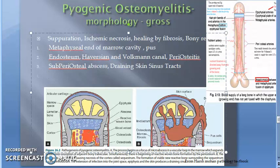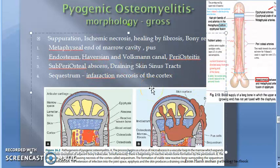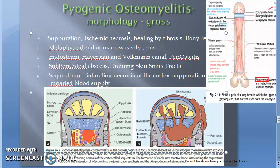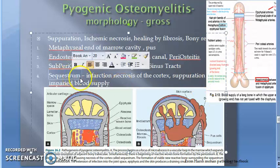Combination of suppuration and impaired blood supply to the cortical bone results in erosion, thinning, and infarction necrosis of the cortex — this is called sequestrum. Sequestrum is formed — it is the infarction necrosis of the cortex. Because of suppuration and impaired blood supply to the bone, the cortex undergoes necrosis and this is called sequestrum. This term is important and has been asked in exams. The cortex will be eroded and thin.